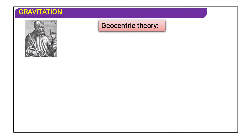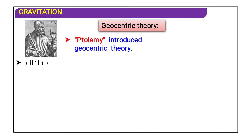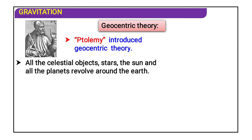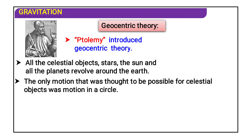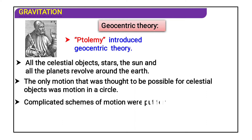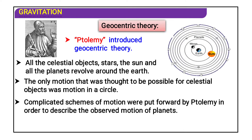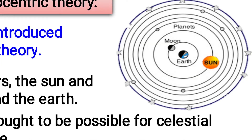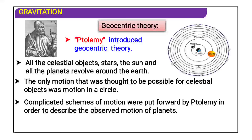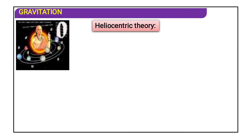Ptolemy introduced the geocentric theory, which states that all celestial objects — stars, the sun, and all planets — revolve around the earth. The only motion thought possible for celestial objects was motion in a circle. Complicated schemes of motion were put forward by Ptolemy to describe the observable motion of planets, with the earth at the center.